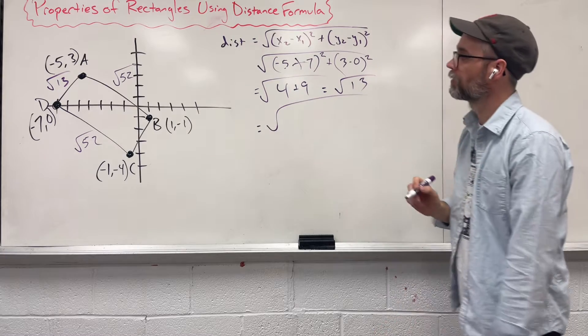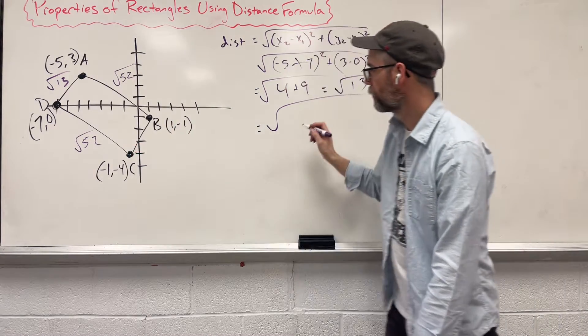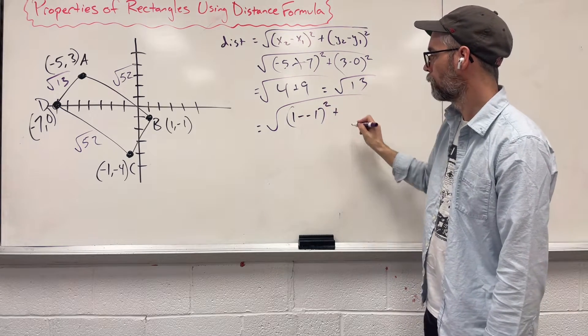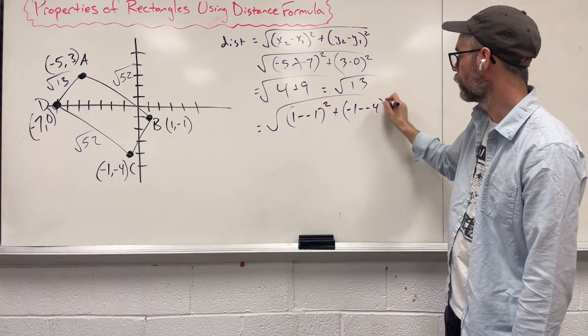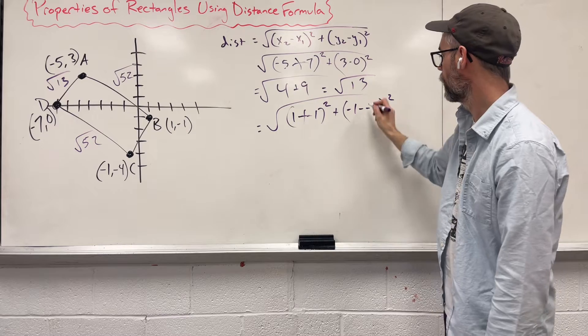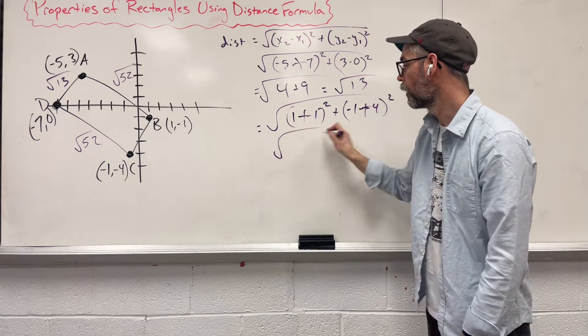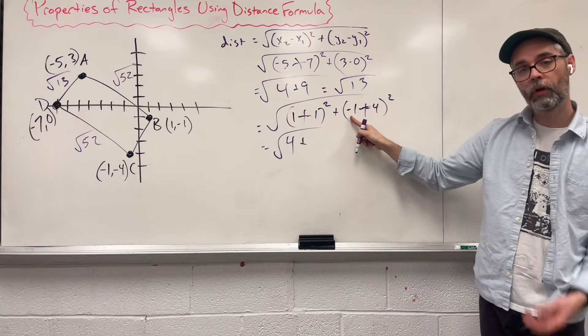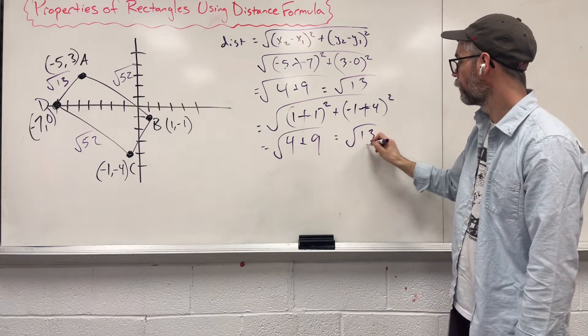And last side. Let's go. 1 minus negative 1, square it. Plus, negative 1 minus negative 4, square it. Minus, minus turns to a plus. 1 plus 1 is 2, 2 squared is 4. Plus, 4 minus 1 is 3, 3 squared is 9. And look at that. Those are the same.